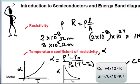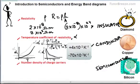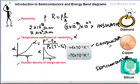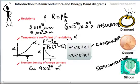The last quantity N is the number of charge carriers. The number of charge carriers in a conductor is extremely high compared to that in a semiconductor. For instance, the number of charge carriers in copper is 9×10²⁸ per meter cube, whereas in silicon it is 1×10¹⁶ per meter cube. So the number of charge carriers is much higher in a good conductor.